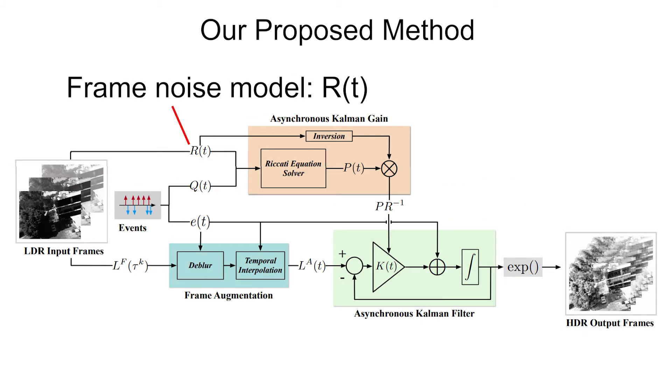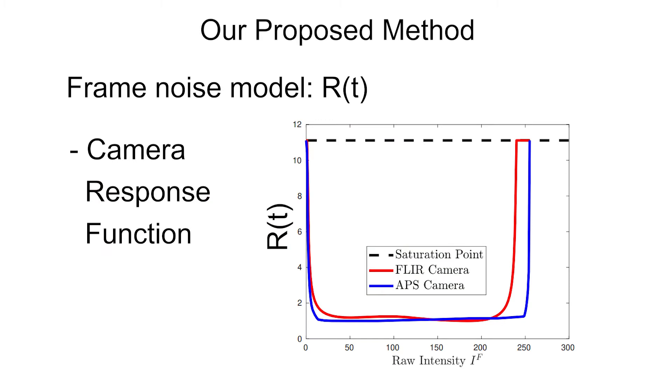The covariance of the frame noise model, R, is based on the camera response function and increases uncertainty associated with extremes of dynamic range in the image frame, that is very low and very high intensity values.